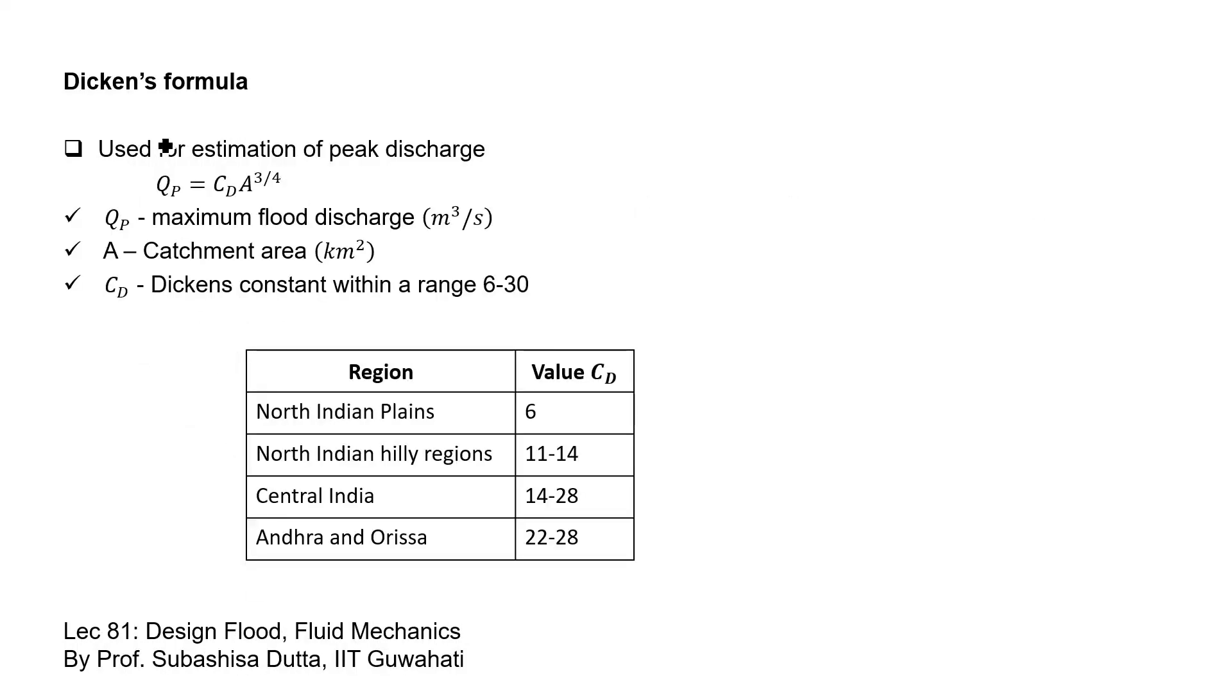Dickens formula is one of those empirical formulas which is used for estimation of peak discharge. The formula is given as qp equals cd times a to the power 3/4, where cd is the Dickens constant and depends upon the region, and a is the catchment area.